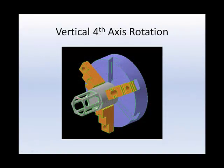In vertical 4th-axis rotation, a rotational device is mounted to the machine table on a vertical machining center. Toolpaths are applied to one side of a part. The 4th-axis then rotates so that toolpaths can be applied to additional sides.